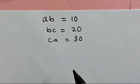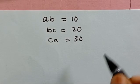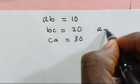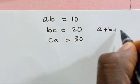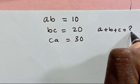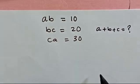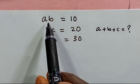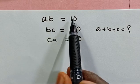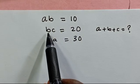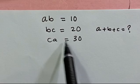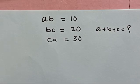Hi, welcome to my YouTube channel. In this video we want to find the value of a plus b plus c, given that a times b equals 10, b times c equals 20, and c times a equals 30.